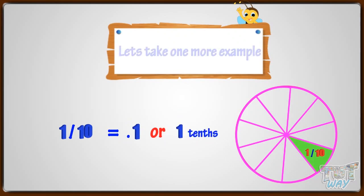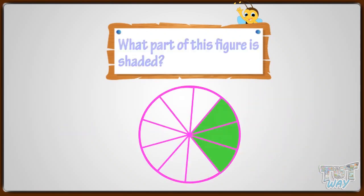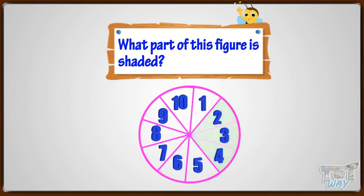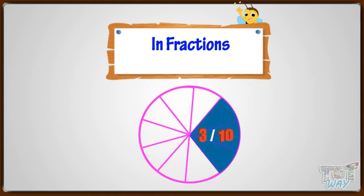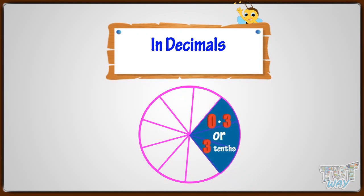Let's take more examples. What part of this figure is shaded? Here, 3 parts out of 10 are shaded. In fractions, we say that 3 by 10 of the figure is shaded. In decimals, we say 0.3, or 3 tenths, part of the figure is shaded.